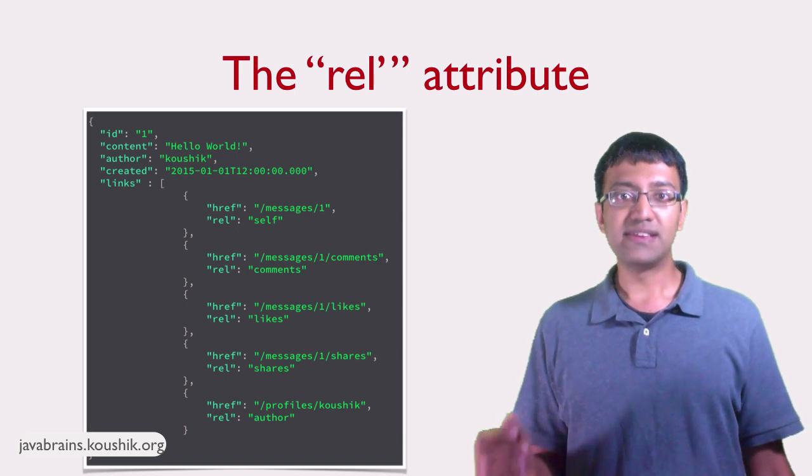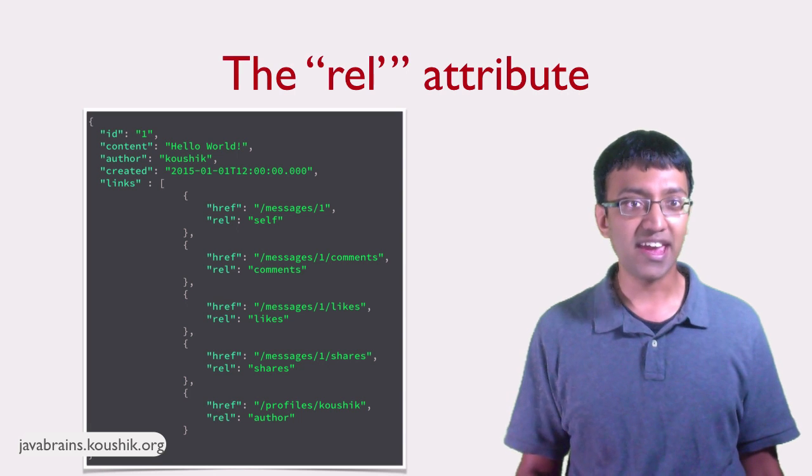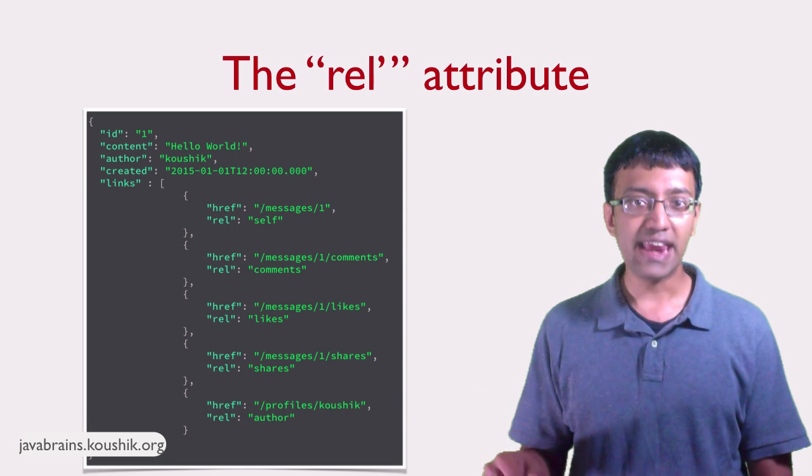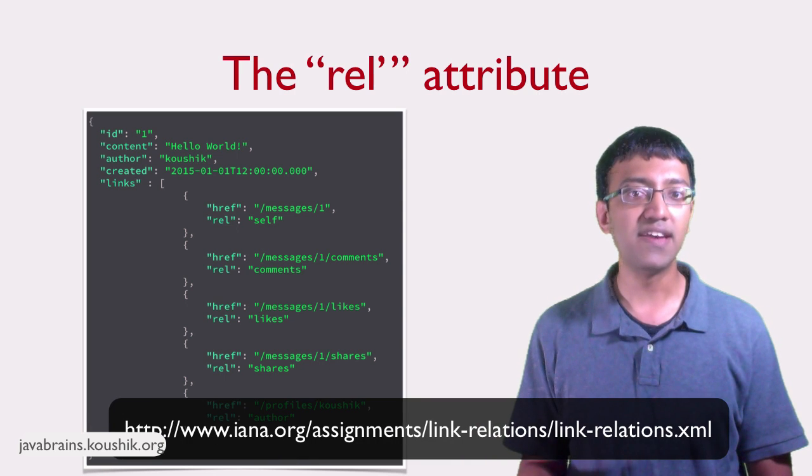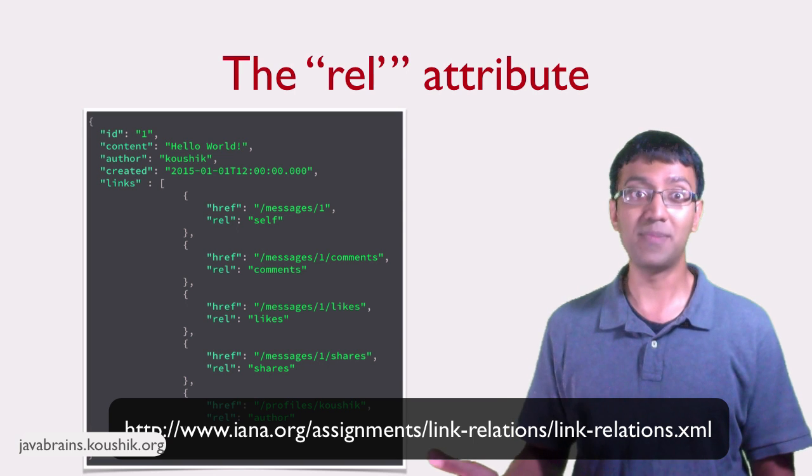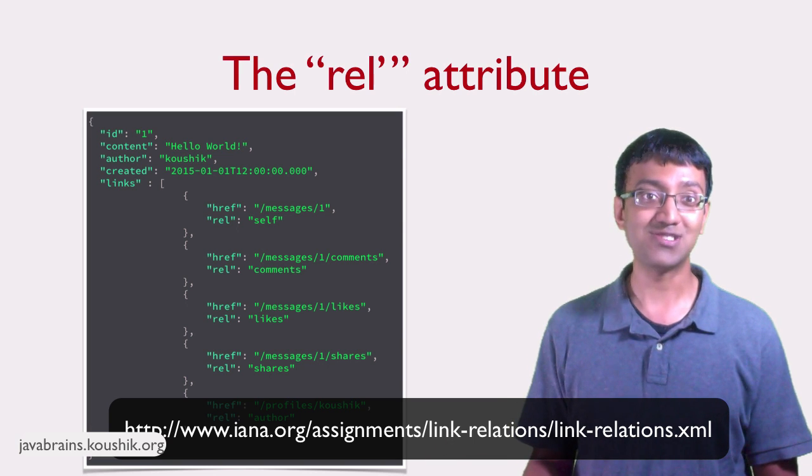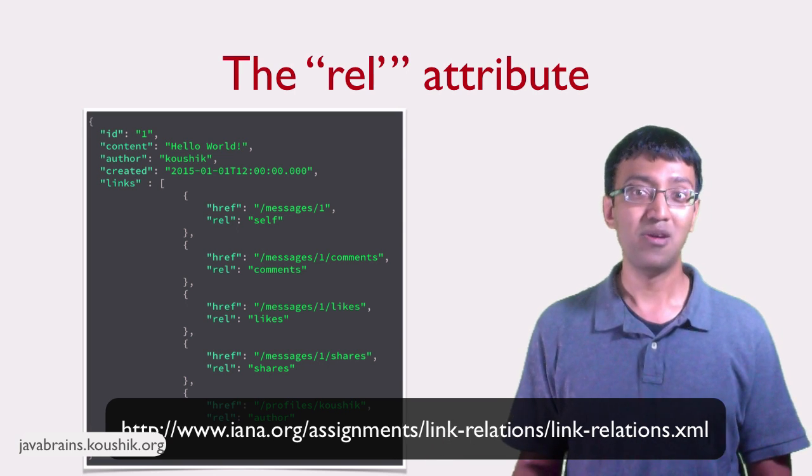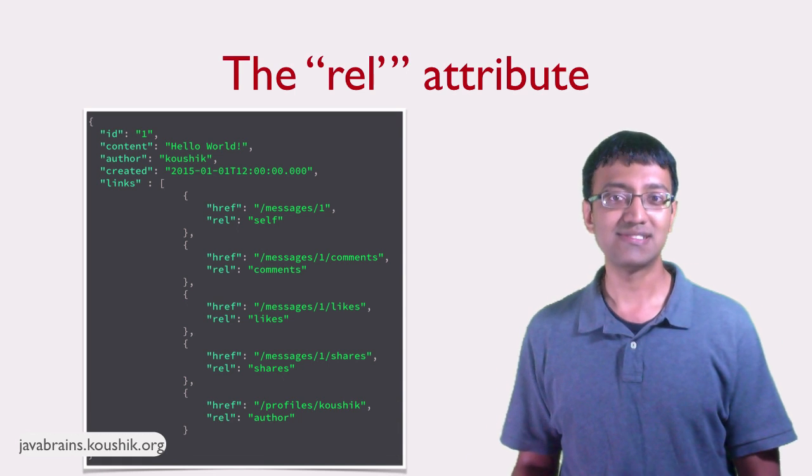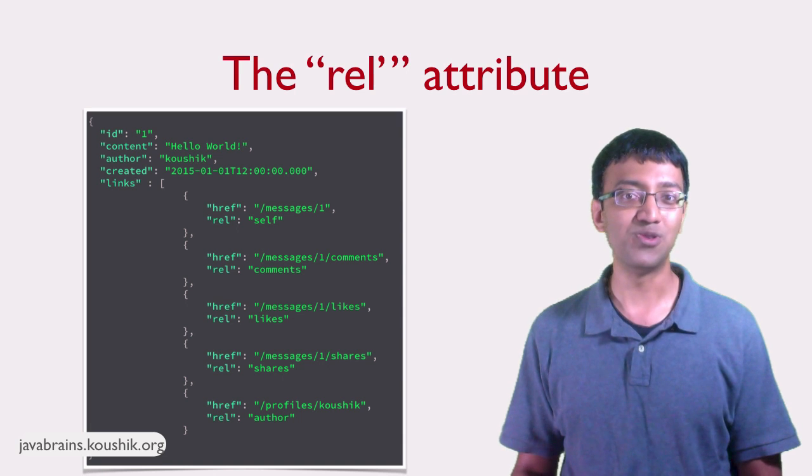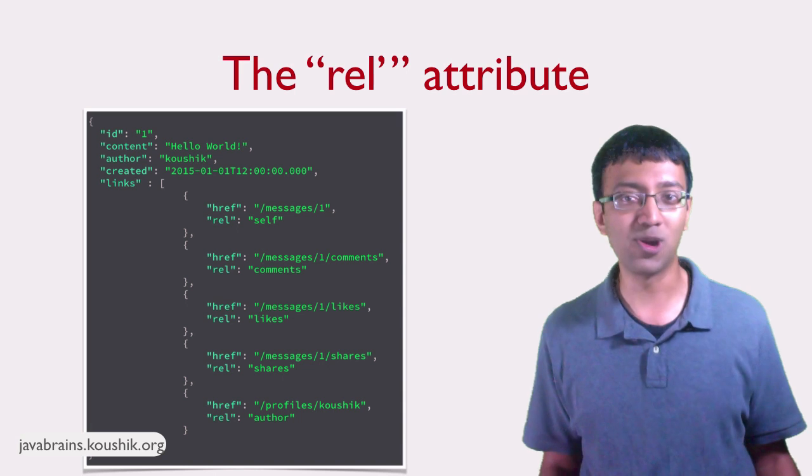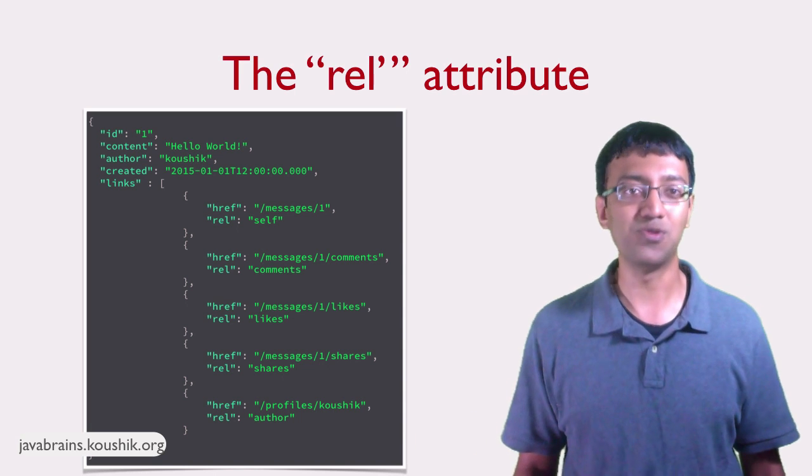Secondly, the rel attribute here is a part of the HTTP specification. So there are only certain standard values that are allowed for it. There is a link in the description which lists the available values. Obviously, the rel value here like comments and likes are not actual standardized values, but we'll still use it. Like I mentioned before, the idea is to have an API that's easy for the clients to use and it's easy for you to maintain. You don't want to focus too much on getting things right and going by the book, at least not at the cost of complicating the API too much.